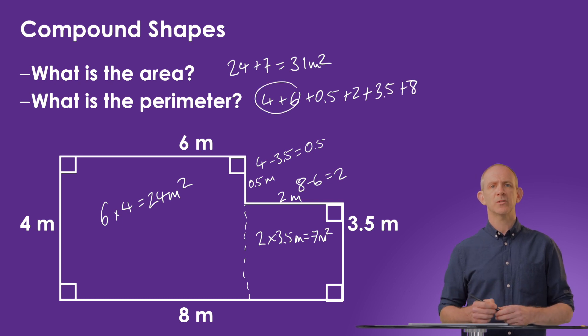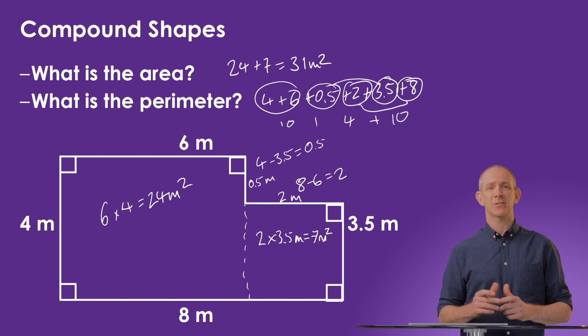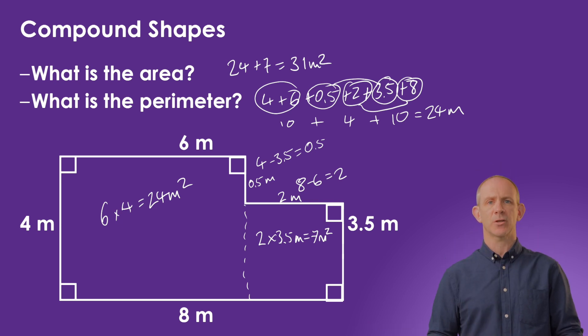In order to calculate the perimeter, we simply add up all the sides together. 4 plus 6 plus 0.5 plus 2 plus 3.5 plus 8. If we notice that several of these areas sum to 10, we can get 10 plus 4 plus 10, which would give us 24 meters. So that's the perimeter for this shape.